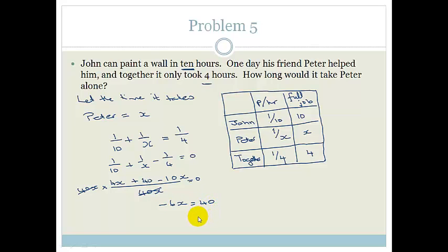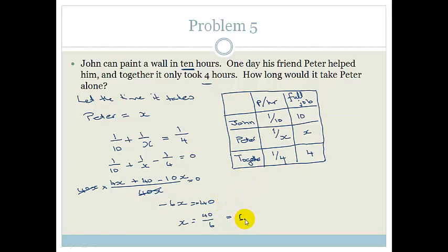Rearranging: negative 6X equals negative 40, so X equals 40 divided by 6. On a calculator, 40 divided by 6 gives 6.67 hours. So the amount of time it would take Peter alone is 6.67 hours.